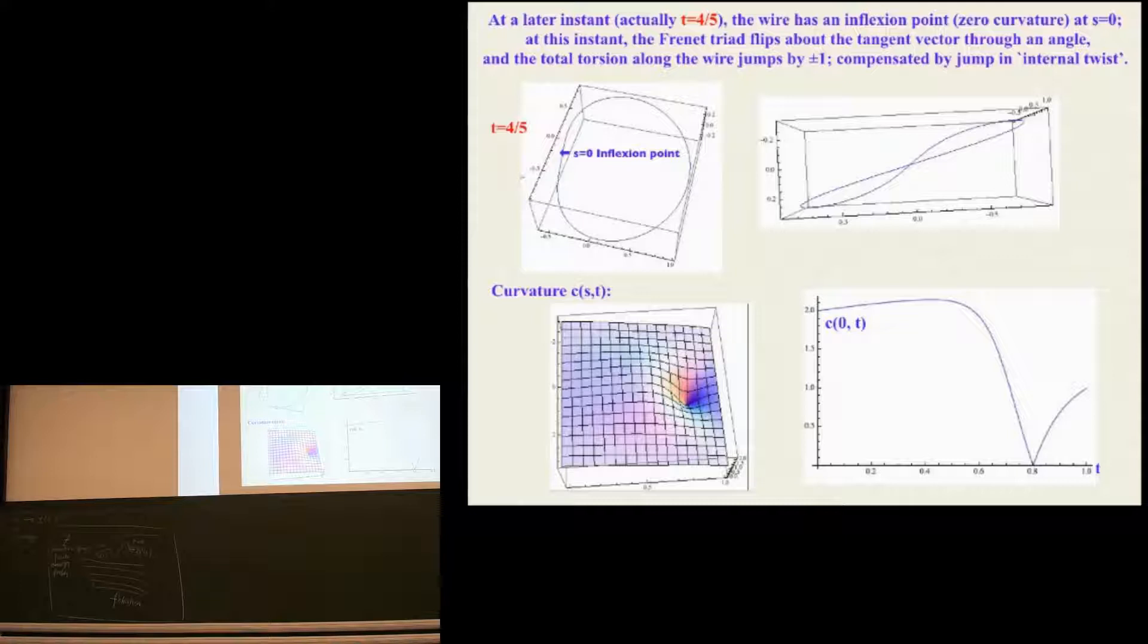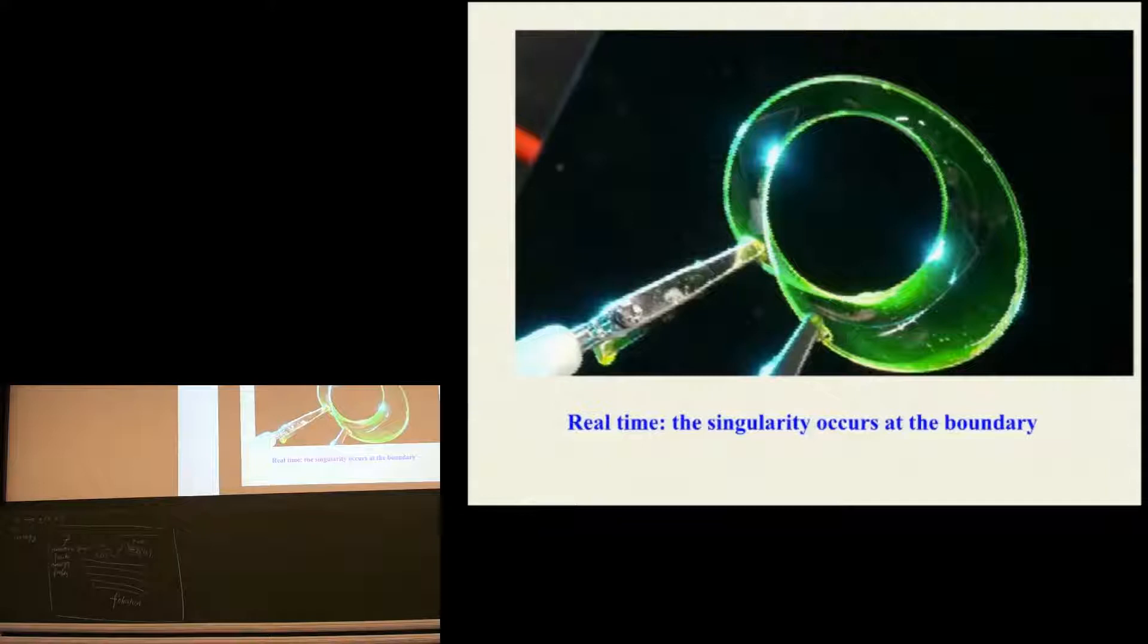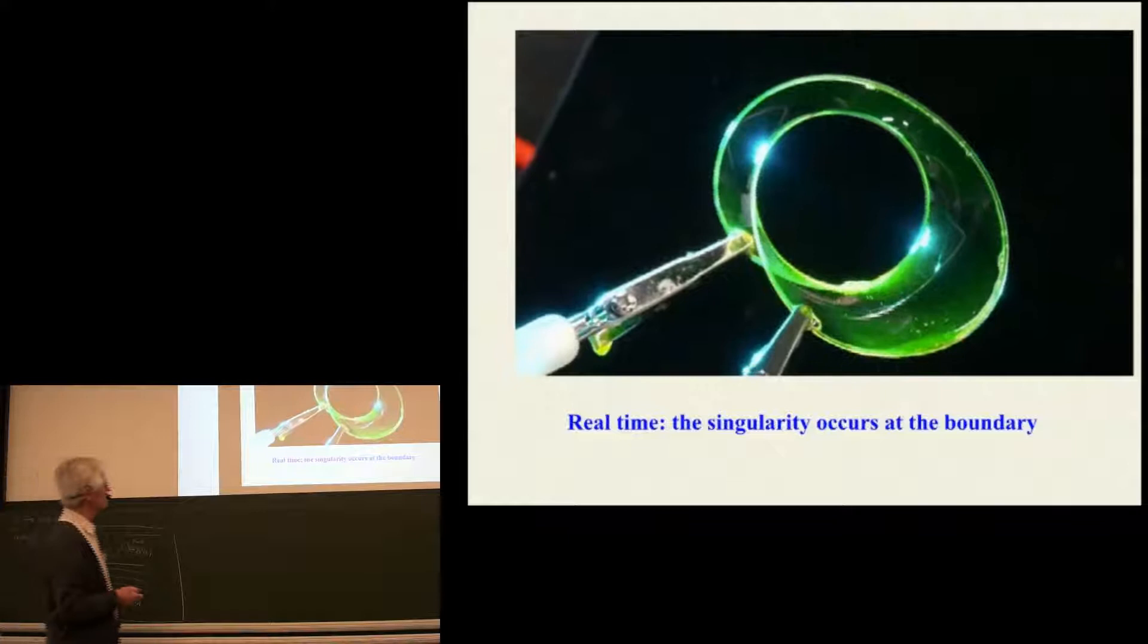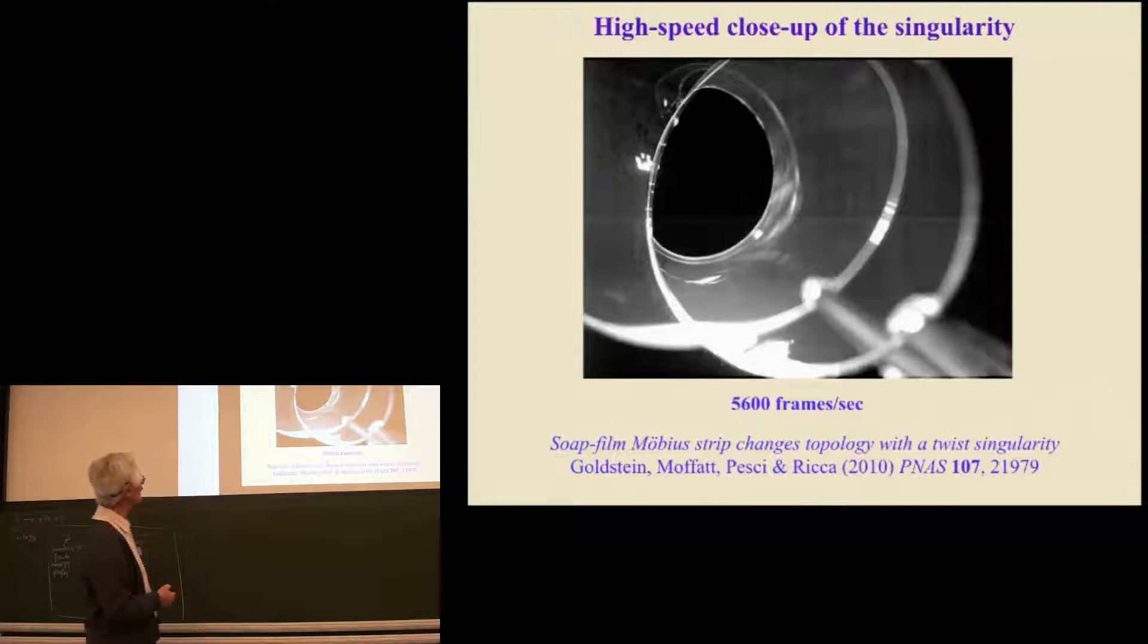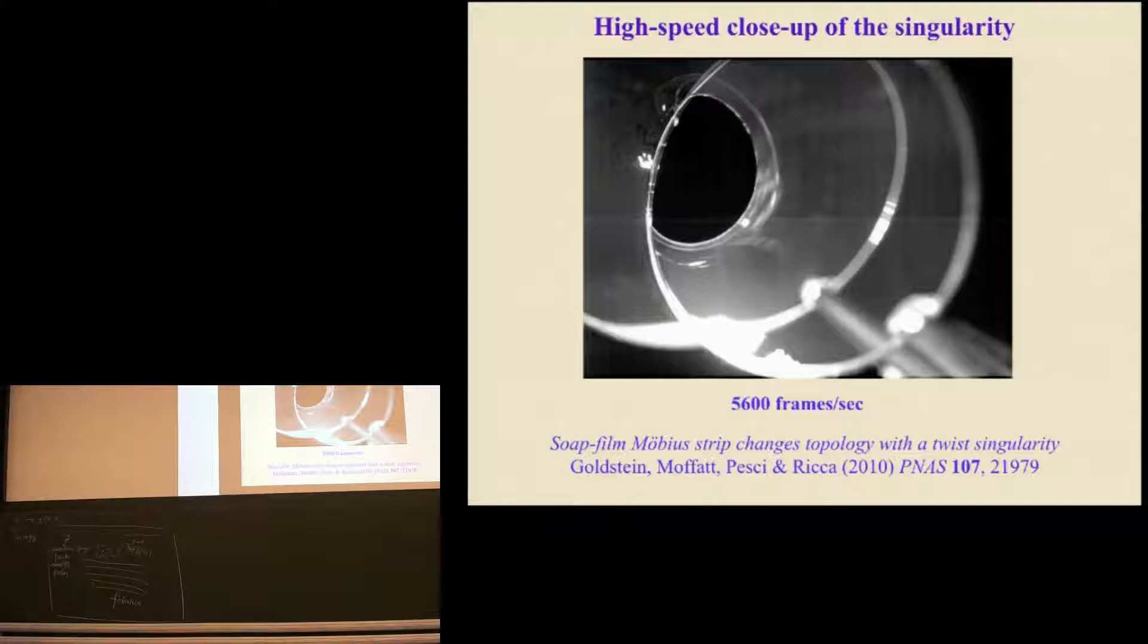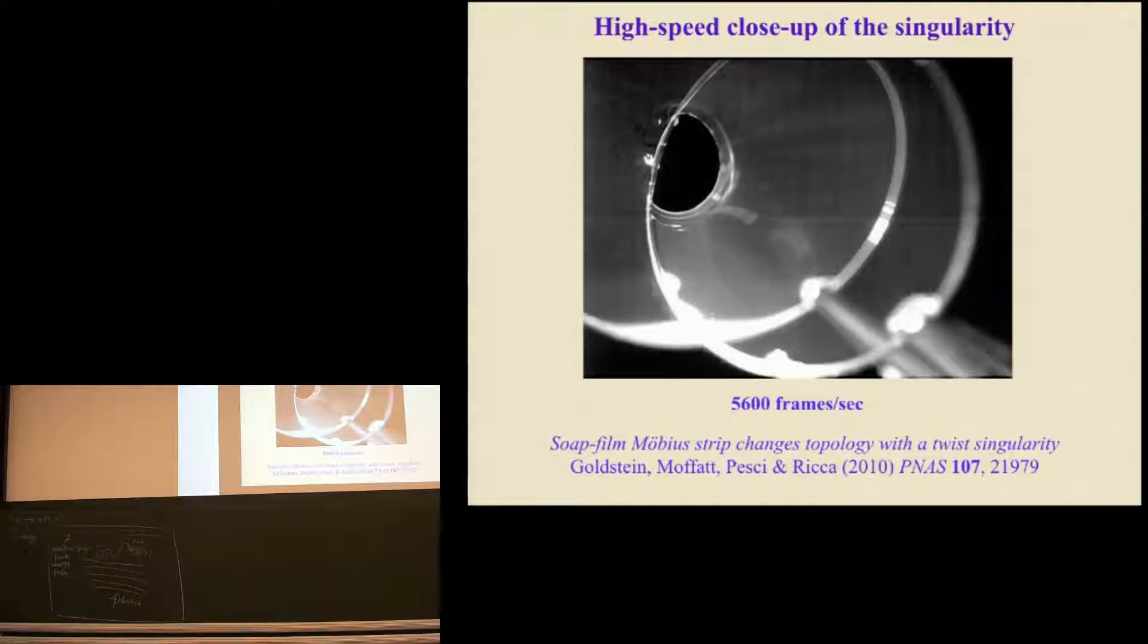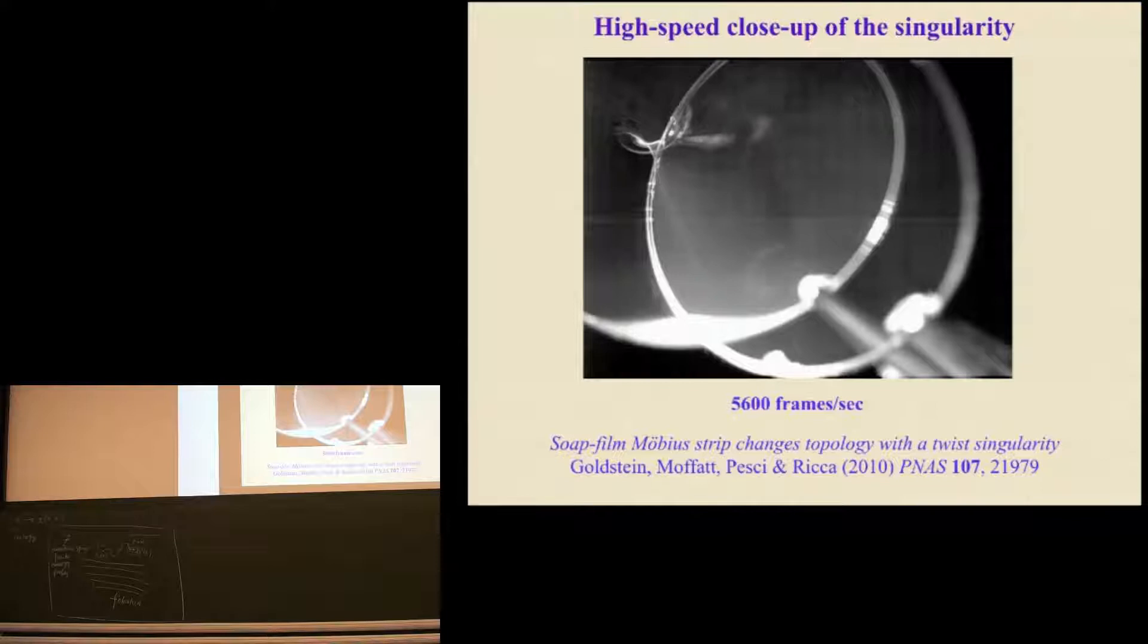So we go back to this situation here. And as I say, the real singularity occurs at the boundary. Let's slow it down. Now here it's going more slowly, 5,600 frames per second, the high-speed camera. So we see the collapse of that bubble to the boundary. Now, there's something funny here. And to begin with, we thought this is just an optical effect. But then we did this again and again.